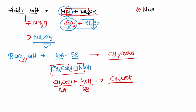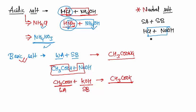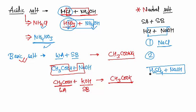The third type is neutral salt, formed from a strong acid plus a strong base. Take strong acid HCl and strong base NaOH — the salt formed is NaCl, which is a neutral salt. Another example: H2SO4 (strong acid) and NaOH (strong base) give Na2SO4, which is again made from strong acid and strong base, so it is a neutral salt.